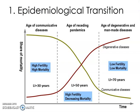Here's what the ETM looks like visually — it's similar to the DTM. It appears to have roughly three stages. The first stage, the age of communicative diseases, features high fertility rates because there's no access to contraception, but also high mortality rates. Life expectancy is only about 30 years, corresponding to DTM stages one and two.